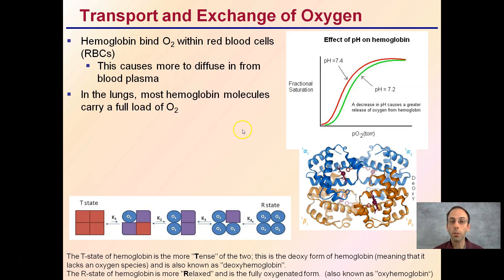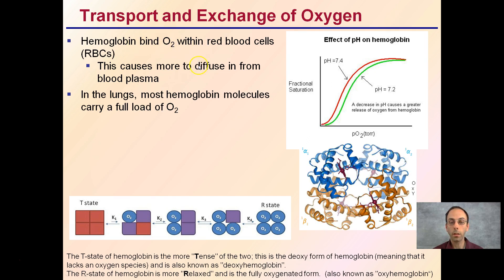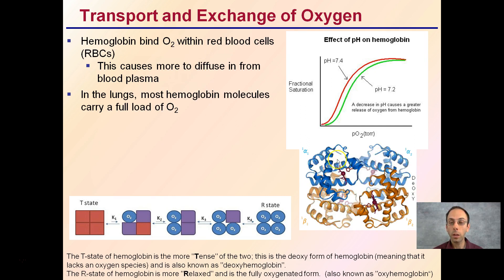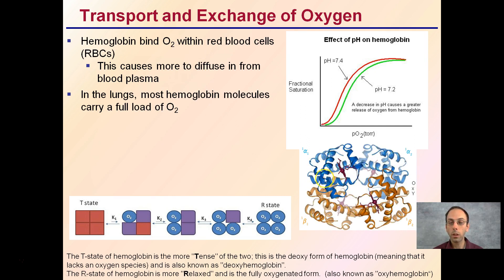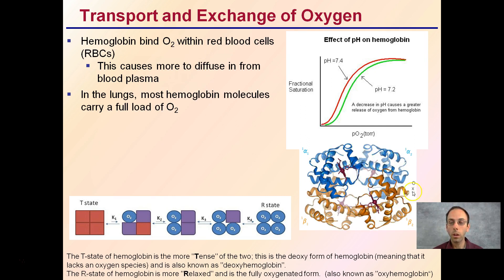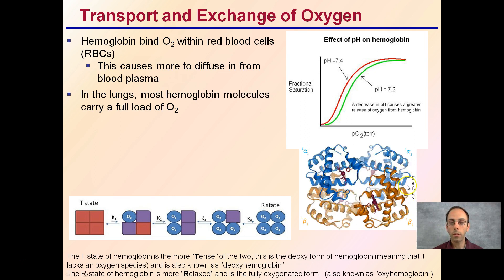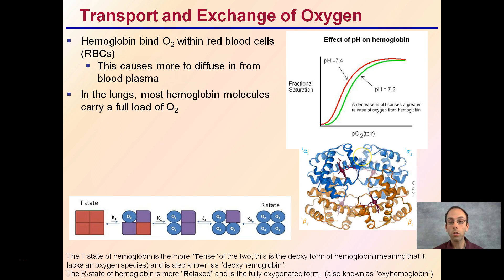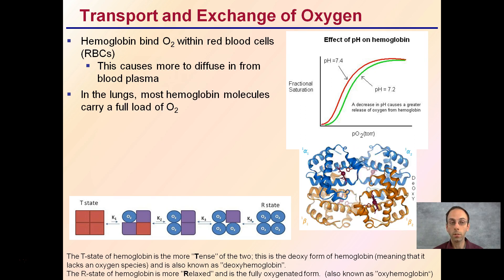The transport and exchange of oxygen: hemoglobin binds with oxygen within red blood cells. We see this example here — here's our hemoglobin, and it's changing shape. In one case we have it deoxygenated, in another case oxygenated. So it does change shape when bound with oxygen.